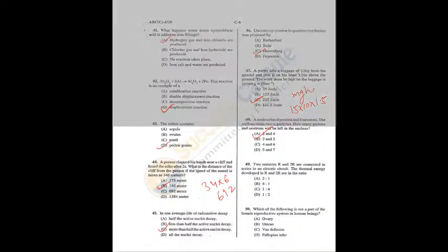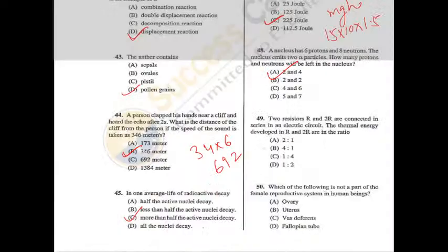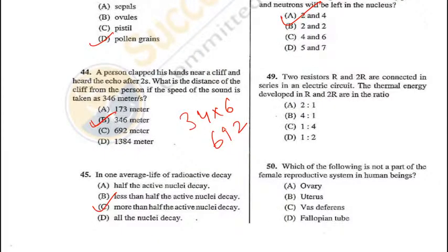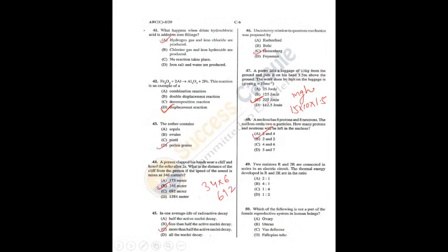Question 49: Two resistors R and 2R are connected in series. The thermal energy developed in R and 2R is in the ratio 1:2 — D is the correct answer. Question 50: Which of the following is not part of the female reproductive system? The female reproductive organs include uterus, fallopian tubes, and ovaries. The answer is C — it is part of the male reproductive system.